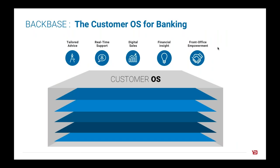The Backbase Customer OS has five core layers. On top — from a customer perspective — you see advice, real-time support, and digital channels. The first layer is user experience management: all the experiences on any type of device, any type of channel, for any type of user, and how we manage those experiences. This is the control of the digital channel — everything on the glass — and it includes content management, personalization, targeting, and anything you'd expect from a content management system and more, with capabilities like targeting and personalization bleeding in.